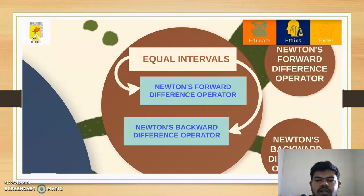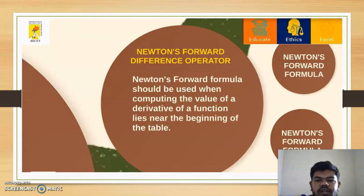When the table value is in equal intervals, we have two operators: one is Newton's forward difference operator and another one is Newton's backward difference operator. First, we will discuss Newton's forward difference operator. Newton's forward formula should be used when computing the value of a derivative of a function that lies near the beginning of the table.